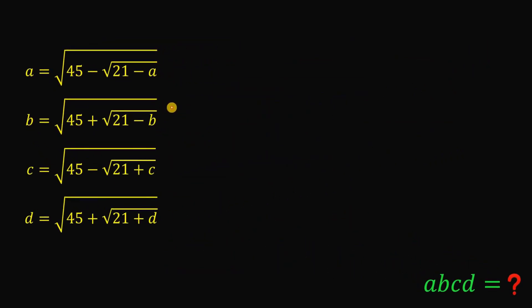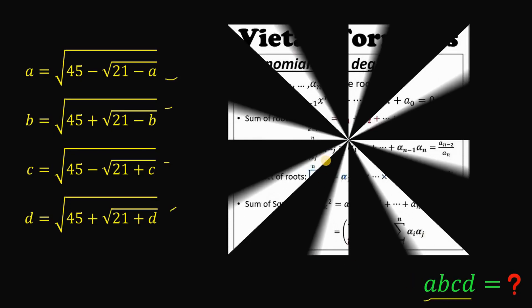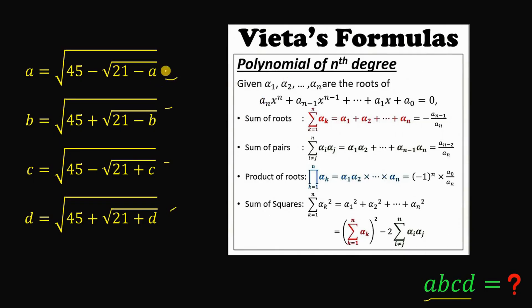We are given four equations and the target is to find the value of the four variables a, b, c, and d. This reminds us of what we call Vieta's formulas, but we're not interested in the sum of roots or sum of pairs of roots — we're interested in the product of roots. Given a polynomial, the product of its roots is given by the formula: negative one raised to the power of n, times a-sub-zero over a-sub-n.